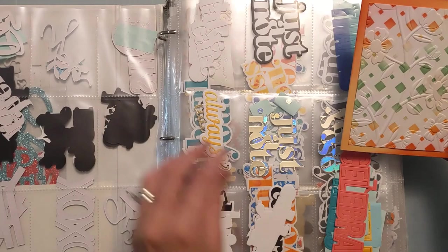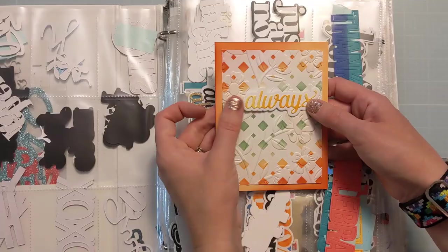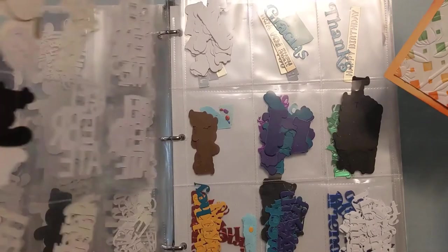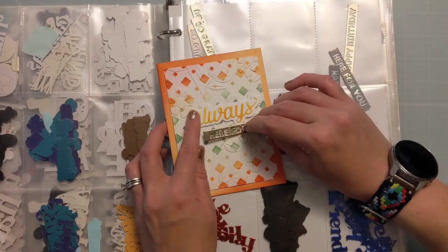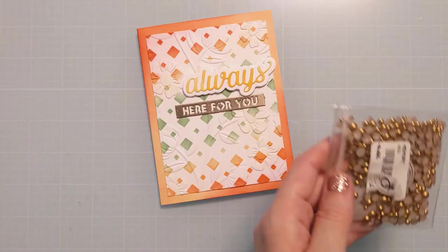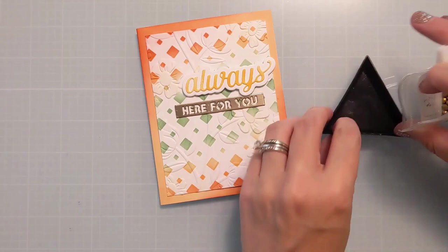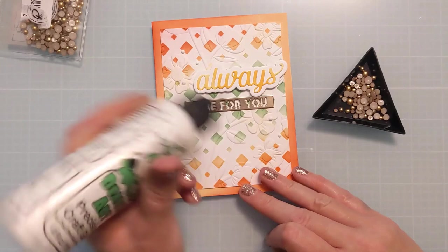So now I'll attach that panel to the card base and then I just need to pick a sentiment to finish the card. So I have this always die cut. I can't think right off the top of my head where that's from. I will link it in the video description box below if I can find it. But this is my storage solution to fill up all these little baseball card pocket protectors with all of these die cuts. So this is a way I'm really able to save time and batch a bunch of cards and have different components ready to go. So that here for you strip is for sure Altenew as well. The always I'll just have to double check.